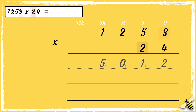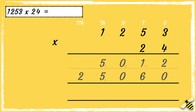Now we need to multiply two tens by three. As we're multiplying the number by two tens, we need to use zero as a placeholder in the ones column. So two times three is six. Then we can work out two tens multiplied by five tens: two times five is ten. We can drop the one down in the thousands column. Next we work out two tens multiplied by two hundreds: two times two is four, and then add one more is five. Then we work out two tens multiplied by one thousand: two times one is two.